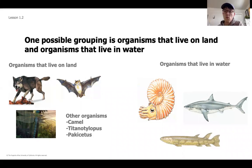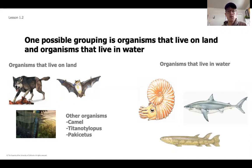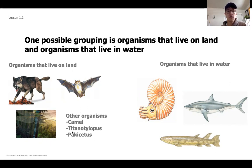Those were nine different species that you may have sorted in a few different ways. One idea is sorting based on where they live — these organisms live in water and these organisms live on land. Maybe that was one way you chose to sort them.